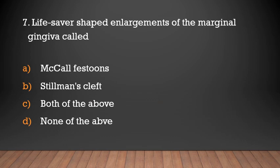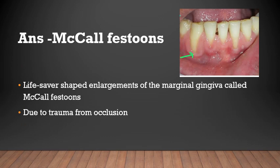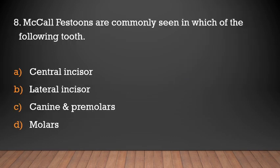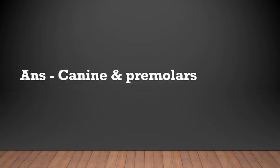Lifesaver-shape enlargement of the marginal gingiva is called: McCall's festoon, Stillman's cleft, both, or none? The answer is McCall's festoon. Lifesaver-shape enlargement of the marginal gingiva is called McCall's festoon, and it is due to trauma from occlusion. McCall's festoons are commonly seen in canines and premolars.